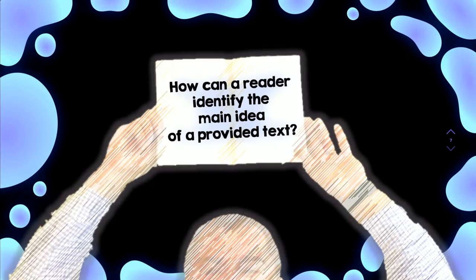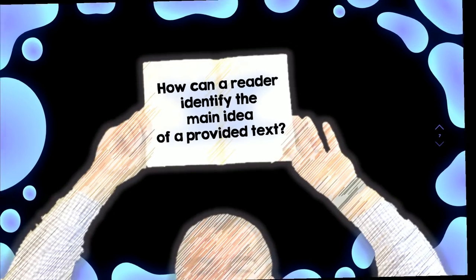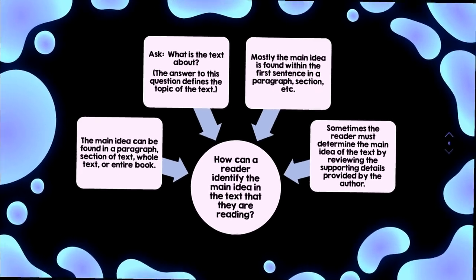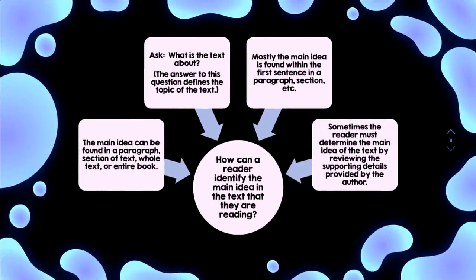How can a reader identify the main idea of a provided text? The main idea can be found within a paragraph, a section of text, the whole text, or an entire book. You need to ask yourself: what is the text about? The answer to this question defines the topic of the text. Mostly, the main idea is found within the first sentence of the paragraph or section. Sometimes, the reader must determine the main idea by reviewing the supporting details provided by the author.